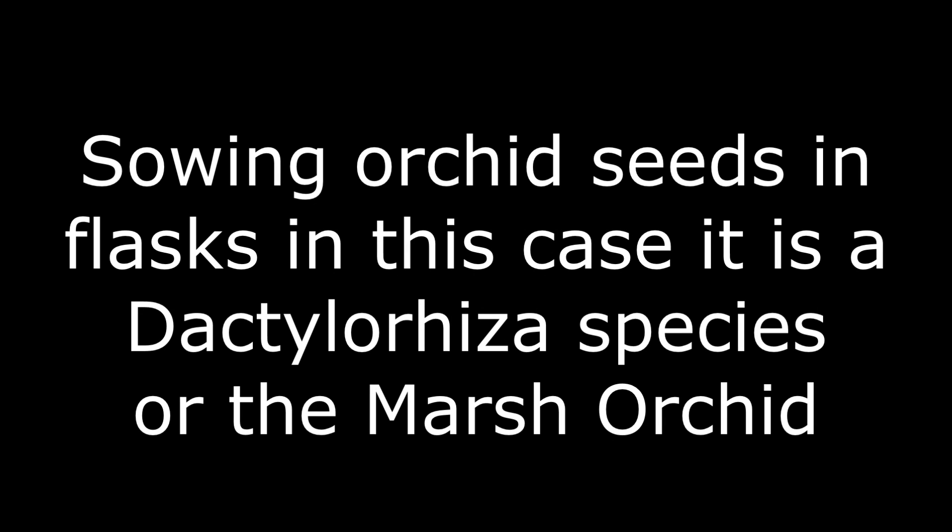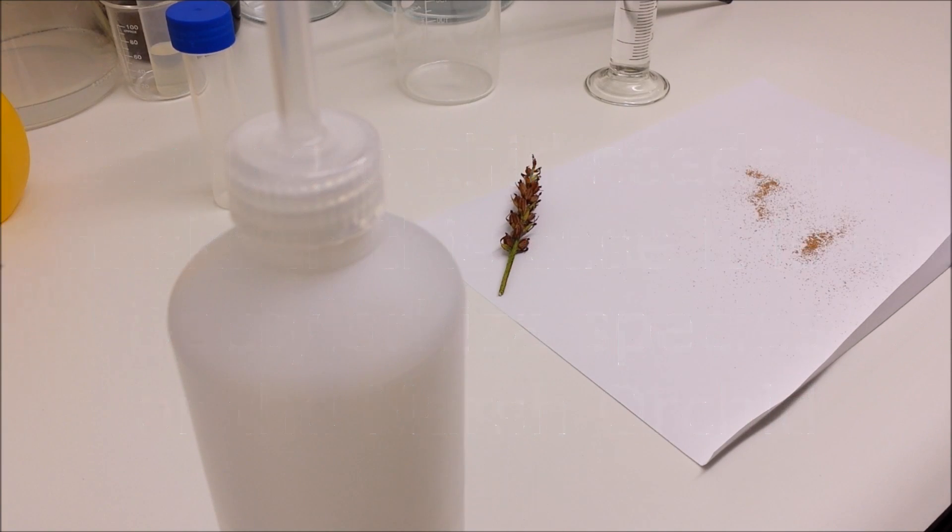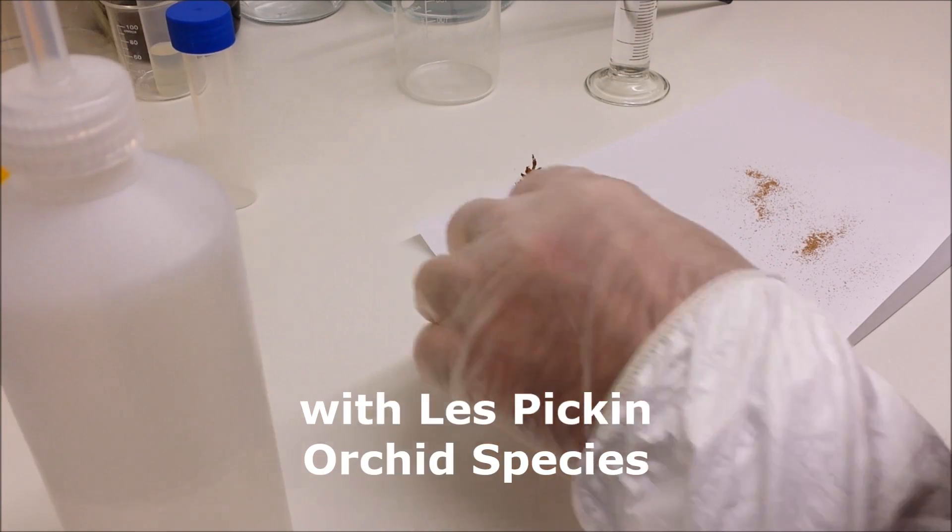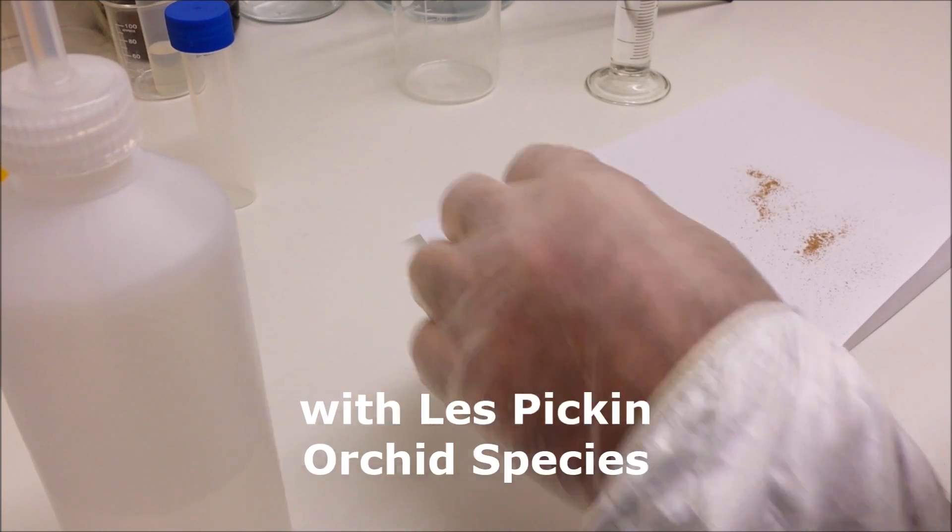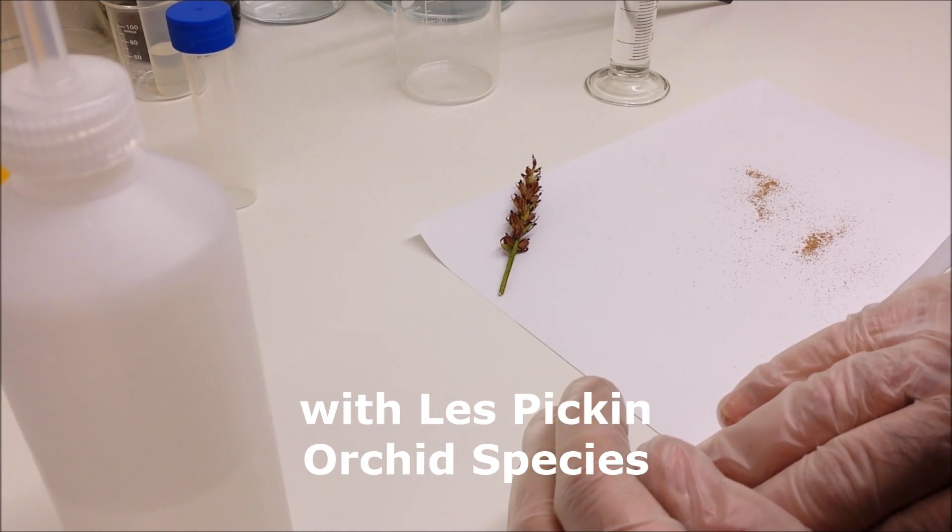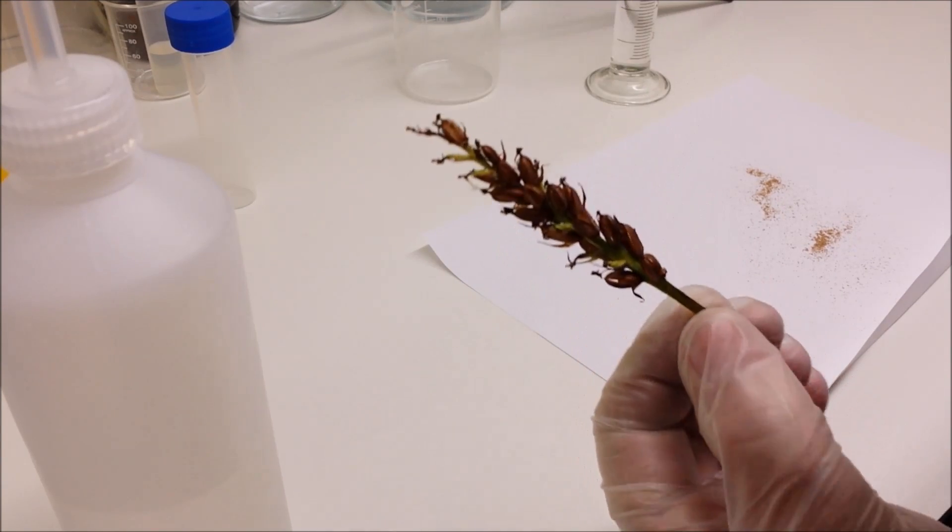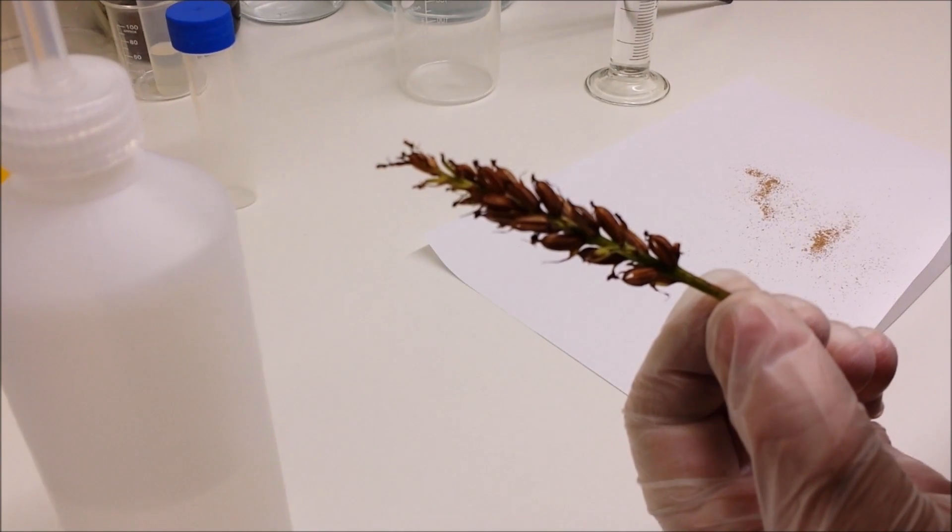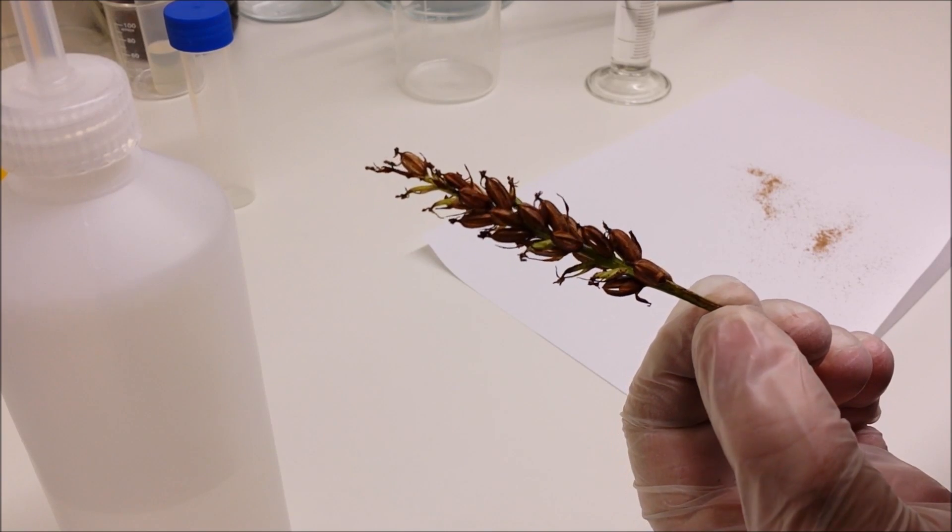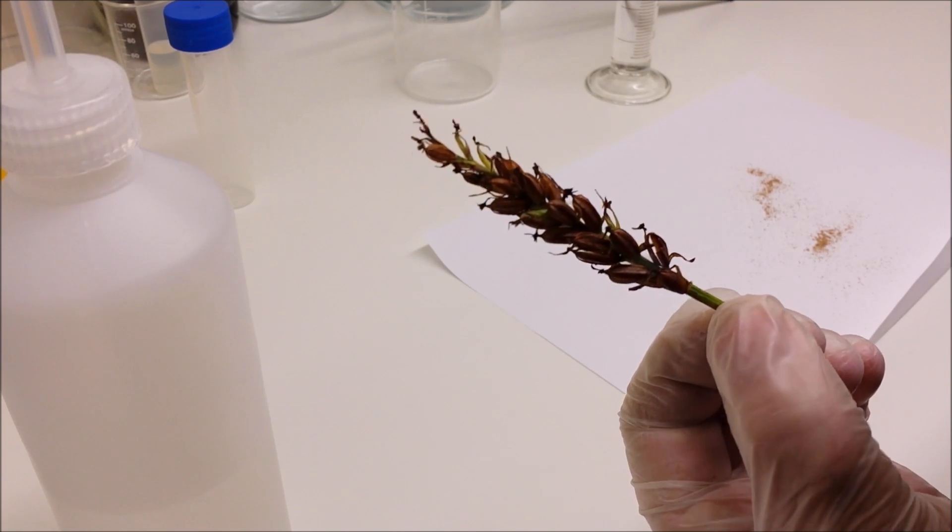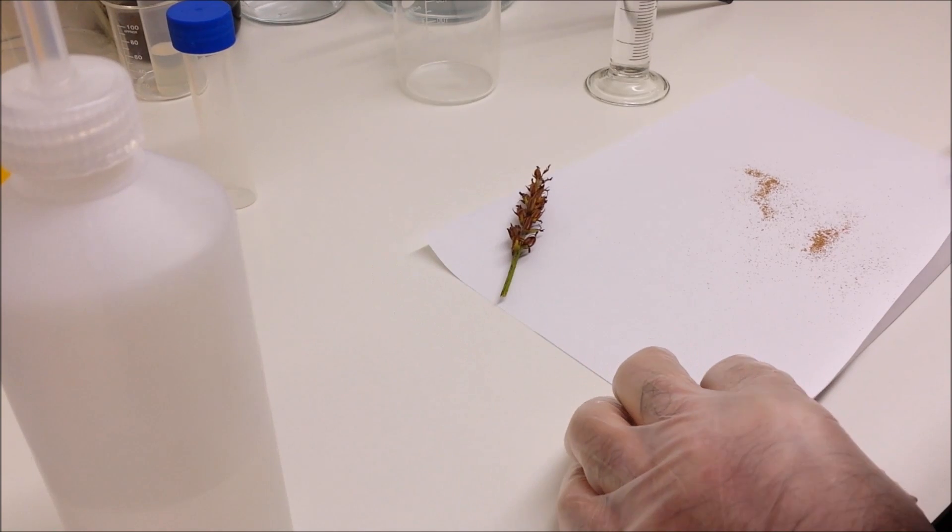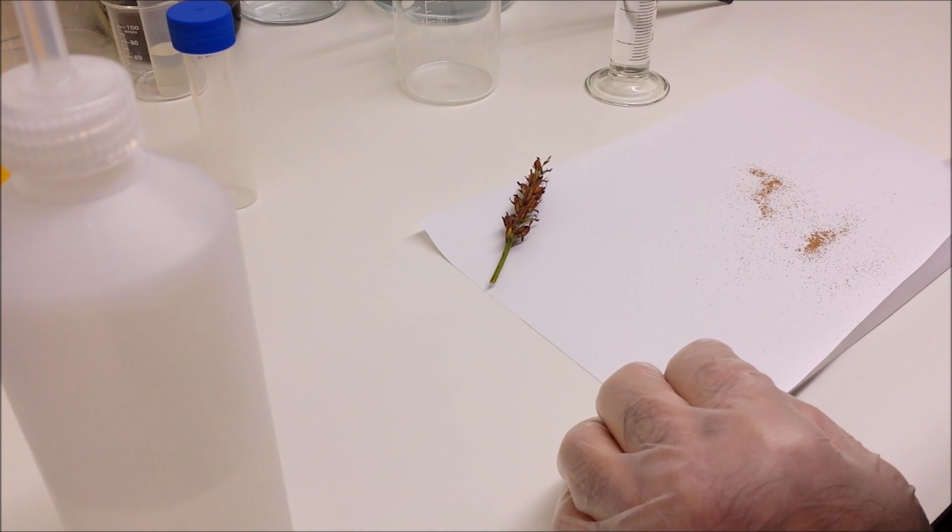Good afternoon, folks. Today we're going to be sowing some Dactylorhiza orchid species, otherwise known as a marsh orchid. This is what a seed pod looks like, or a series of seed pods. It almost looks like an ear of corn. This is a dried one, in other words the seed pods have already split open, which is not ideal, not what I like to use, but I'll give it a go.